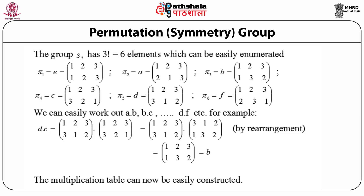To work out the multiplication rule, for example d·c: d is defined as 1→3, 2→1, 3→2 and c as 1→3, 2→2, 3→1. When these are multiplied together, c first permutes 3→1 and then d permutes 1→3, giving 3→3. Also, c permutes 2→2 and d permutes 2→1, giving 2→1. And c: 1→3, d: 3→2, so 1→2. Wait — tracing through: 1→1, 2→3, 3→2, which is nothing but the element b.